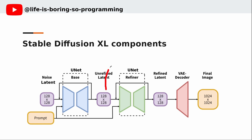We can skip the REFINER model and go to the VAE directly. The VAE decoder is responsible for the conversion from the latent to the RGB image. We may also input the latent to the REFINER model and do the loop. The main components here are the UNET and the decoder. There is also a sampler. So these are the components of SDXL.